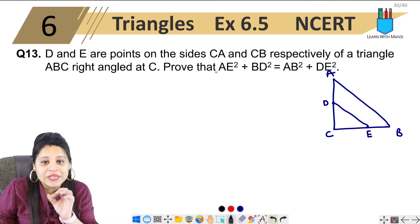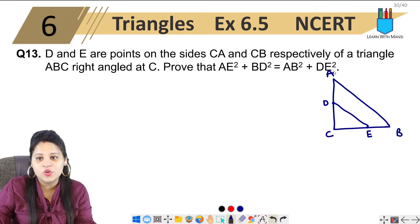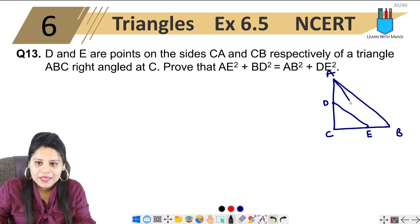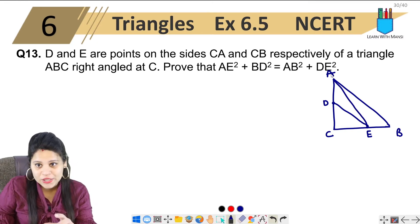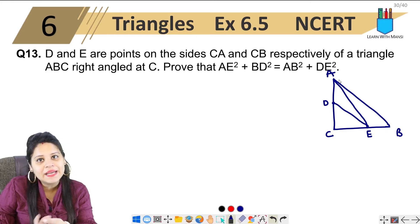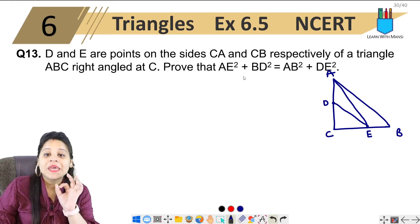Now we have to prove that AE, AE is going to join A and E. Also notice that AEC is a right angled triangle because angle C is 90 degrees.